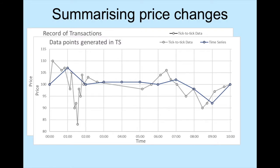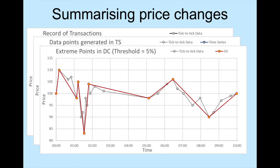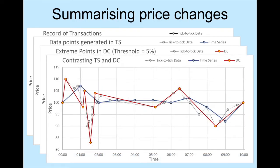Directional change is a different way of summarizing price movements. It records peaks and troughs in the market. A data point is recorded when a significant price change in the opposite direction of the current trend is observed. The minimum change that is considered to be significant is called the threshold. This example shows a directional change summary with a 5% threshold. This figure shows the difference between time series and directional change, which summarizes the same tick-to-tick data.